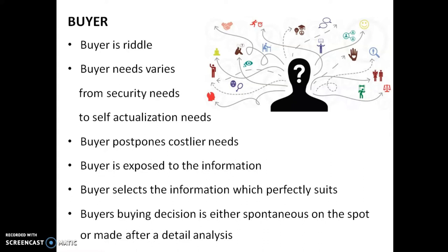The first point shows buyer is a riddle. Riddle means a type of confusion, a type of questioning. So normally, buyer characteristics or buyer behavior is a lot more confusing to the marketing team. Buyer needs vary from security needs to self-actualization needs. When a buyer buys a product, he needs full security from that product and should feel it is secure to him, up to self-actualization needs — meaning he or she should feel that it is really needed.